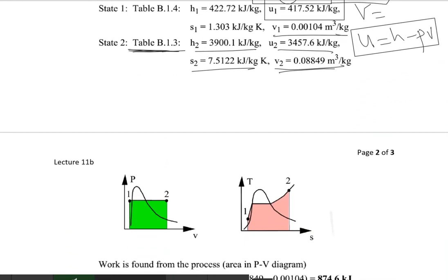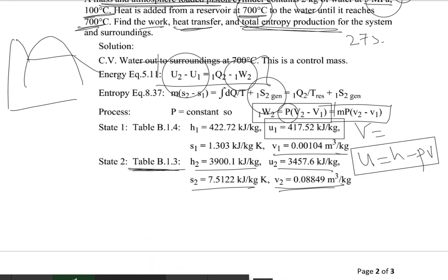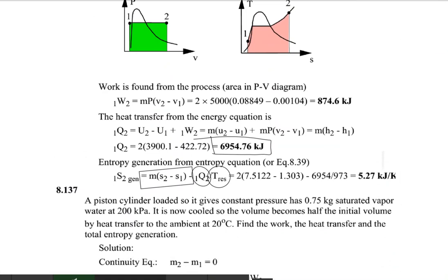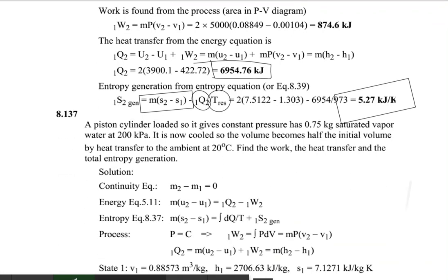For entropy generation, we have entropy S2 and S1 from the steam tables. We put those values into the entropy generation equation along with Q and the reservoir temperature of 700 degrees centigrade (converted to Kelvin). The entropy generated equals 5.27 kilojoules per Kelvin.